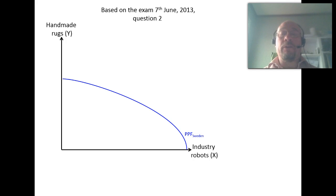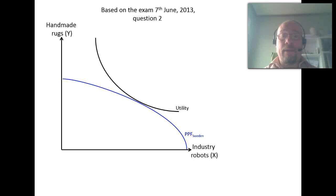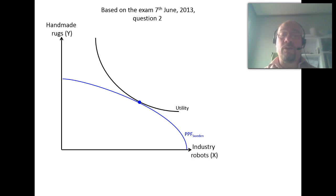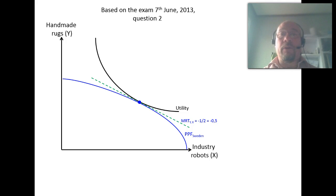When we look at the autarky situation — that is, when we don't have any trade — we want to achieve as high utility in society as possible. So the CIC, the community indifference curve, would be as high as possible. That indicates we want a tangency between the production possibility frontier and the utility function, indicating what we want to consume. In this case, the slope of the production possibility frontier — the MRT, the marginal rate of transformation — would be approximately minus one-half.